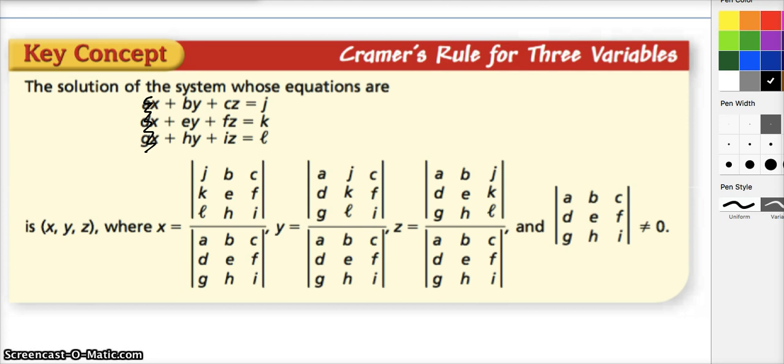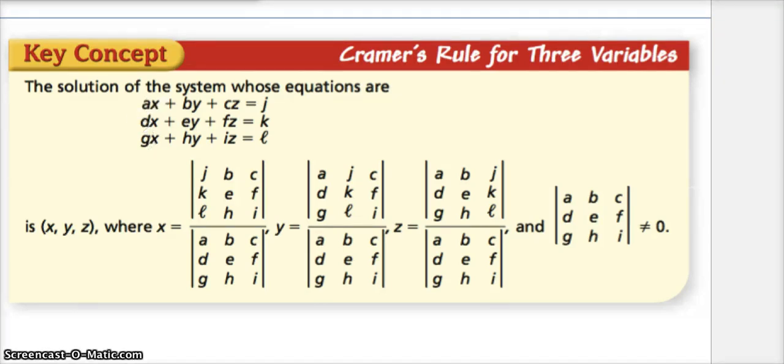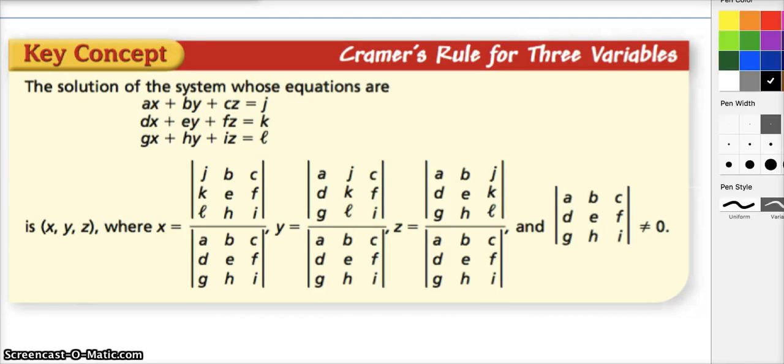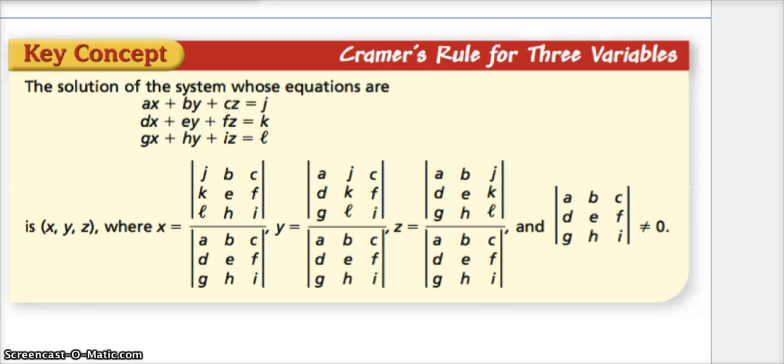To get the y determinant, I'm going to cross out the y terms. Then I'm going to just take it almost as it is: A, D, G. Then the answer: J, K, L. Then the z term: C, F, I. After that, in order to find the z determinant, the numerator of the z answer, I'm going to cross out the z values and just take everything in order. So there was a mixing here, a mixing here, but the same idea of crossing out the value.